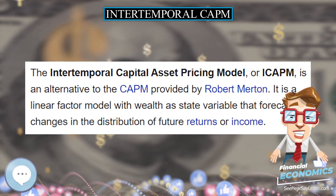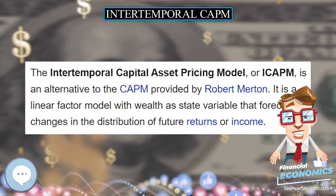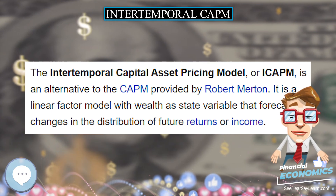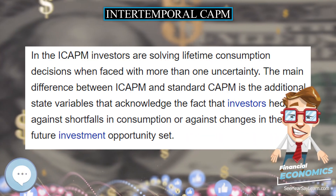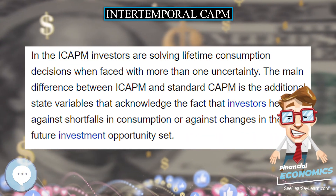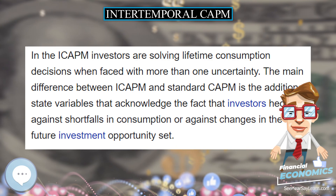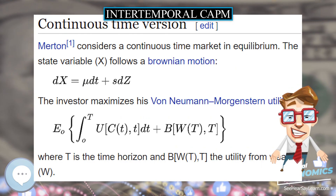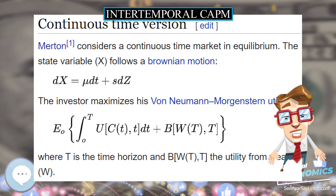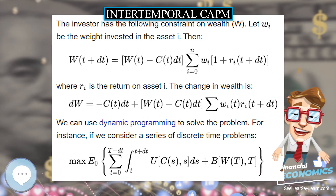The optimal weights are derived from these conditions. Notice that the intertemporal model provides the same weights as the CAPM. Expected returns can be expressed where M is the market portfolio and H is a portfolio used to hedge the state variable.